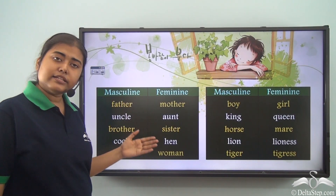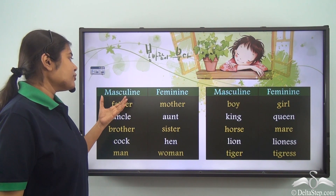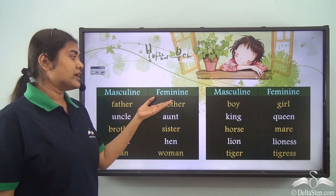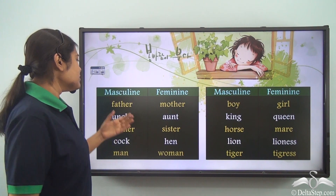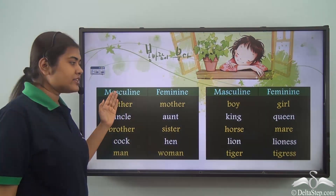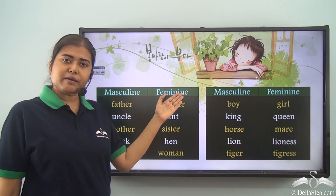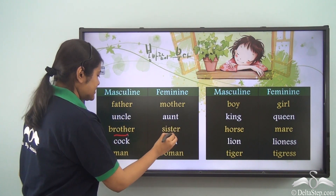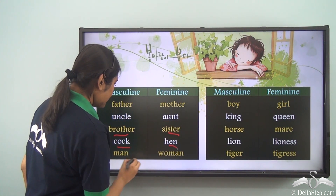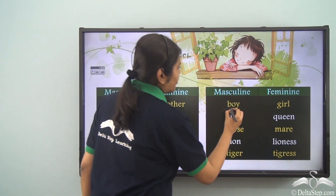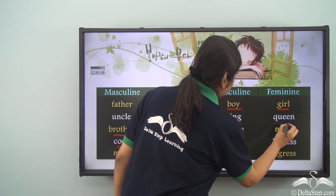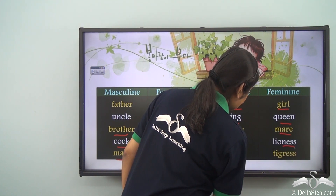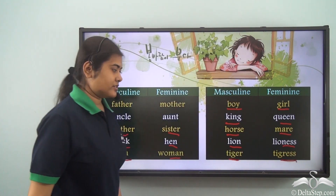Here we have a list of words with their masculine and feminine gender forms. Father belongs to the masculine gender whereas mother belongs to the feminine gender. Similarly: uncle and aunt, brother and sister, cock and hen, man and woman, boy and girl, king and queen, horse and mare, lion and lioness, tiger and tigress.